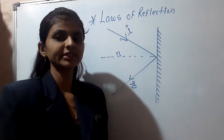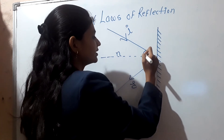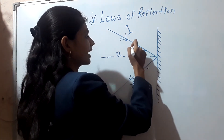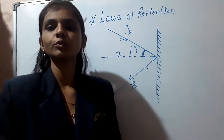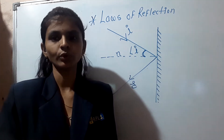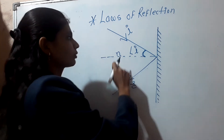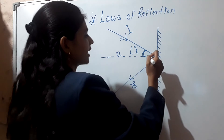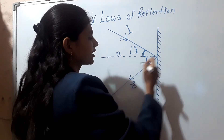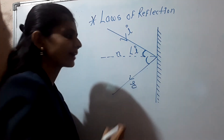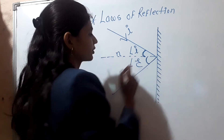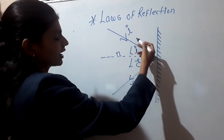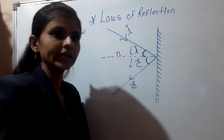The angle between the incident ray and the normal ray is known as the angle of incidence. The angle between the reflected ray and the normal ray is known as the angle of reflection. So the three rays involved are: incident ray, normal ray, and reflected ray.